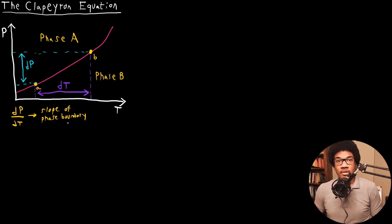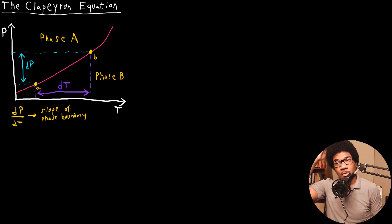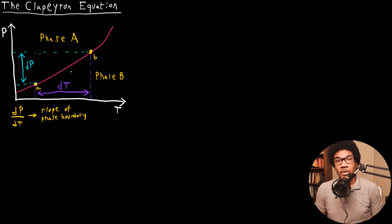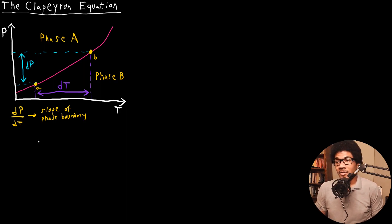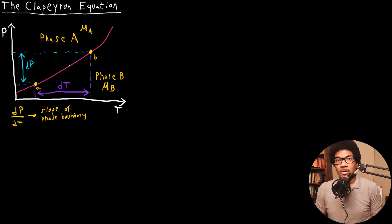What the Clapeyron equation gives us is a general way to look at the slope of phase boundaries. It's not just as simple as equating the pressure and temperature change — we have to use our equilibrium thermodynamics available to us via the chemical potential in order to derive a general equation that would be useful for a phase boundary. The starting point for this derivation is that we know there's going to be a chemical potential associated with each of these phases.